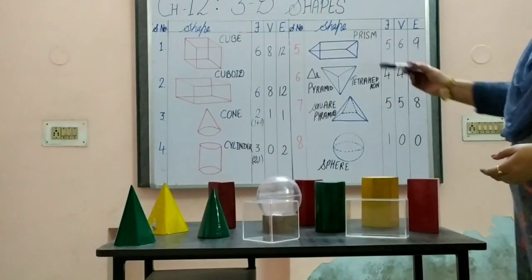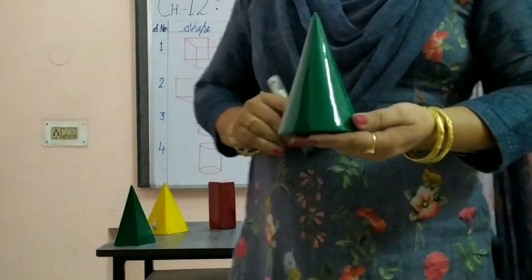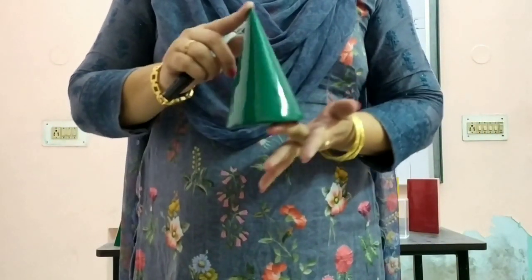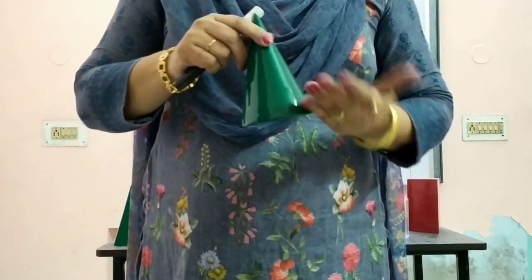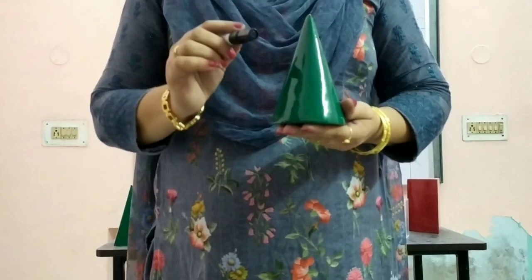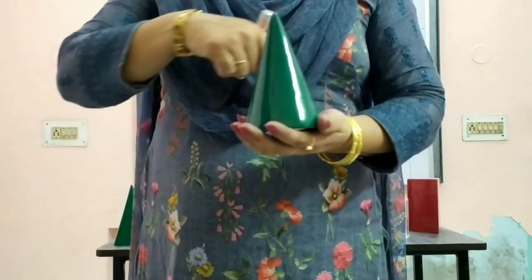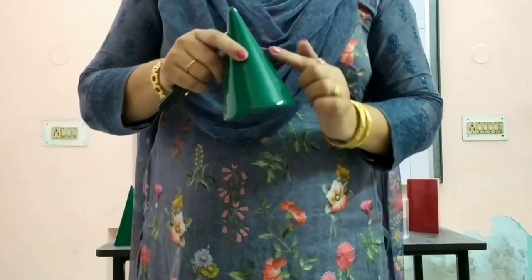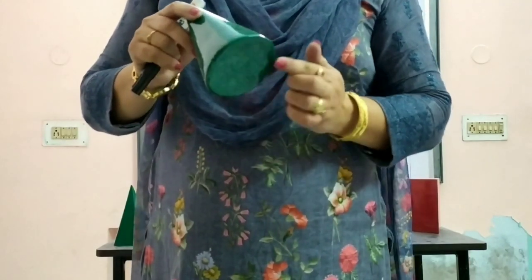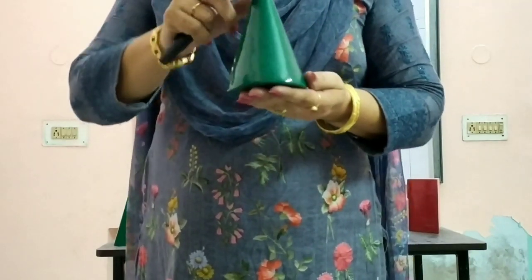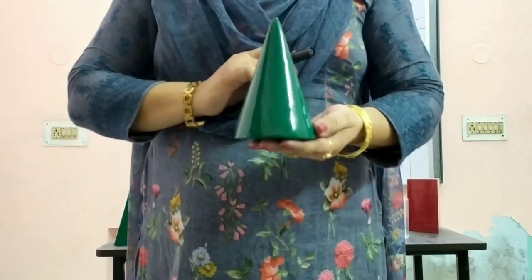Coming to the next shape, that is a cone. In a cone, face means flat surface, and curved surface is also counted as a face — but we have to specify it as curved. So in a cone, there are two faces: one flat and one curved. How many edges? An edge is where two faces join each other, so the curved face and the flat face join to give one curved edge. And there is only one tip — one corner — so it has one vertex.